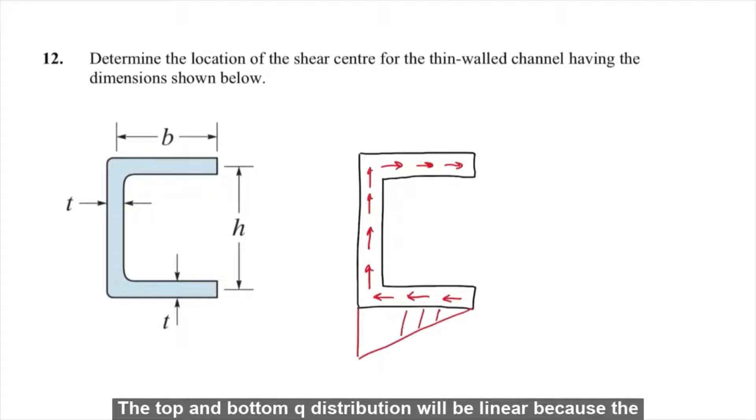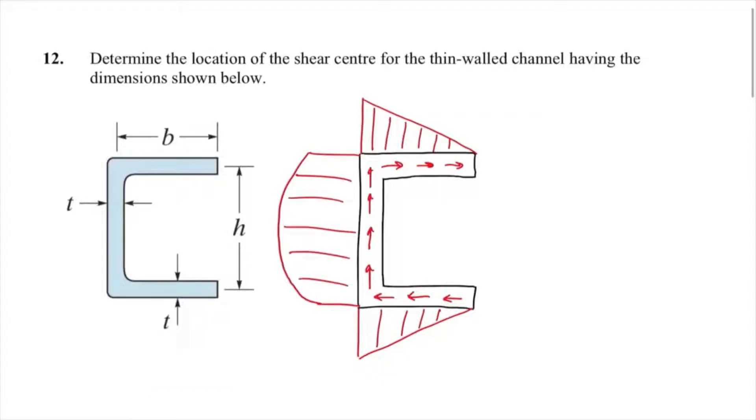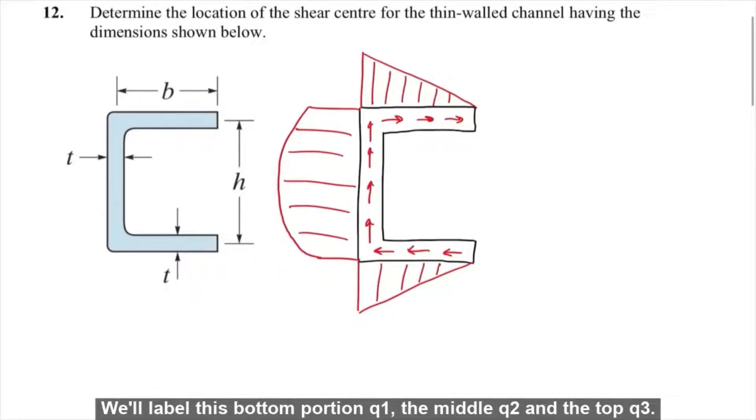The top and bottom Q distribution will be linear because the shear stress will act horizontally, and this middle section will be non-linear because the shear stress acts vertically. We'll label this bottom portion Q1, the middle Q2, and the top Q3.